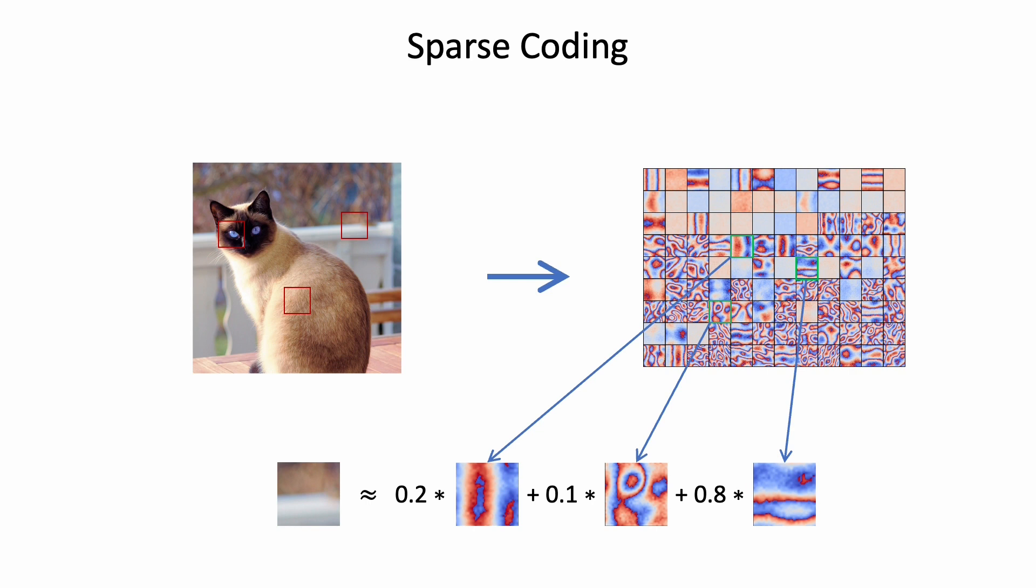Inspired by classical representation learning techniques such as sparse coding and principal component analysis, we assume that signals are not random but structured, and hence share similar structures within the same signal as well as between different signals.